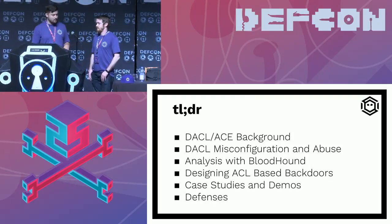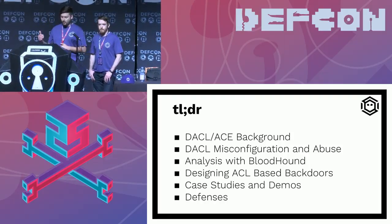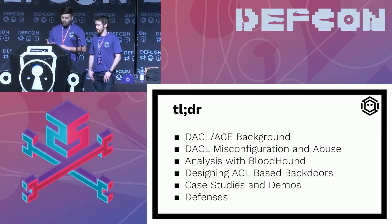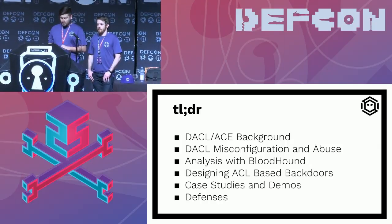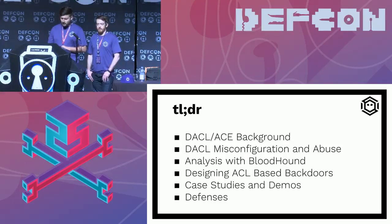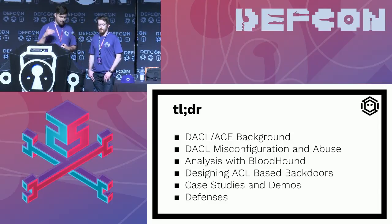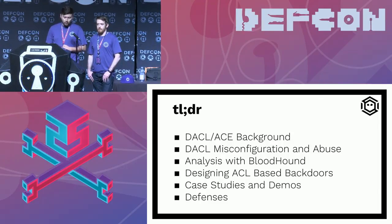I'll give you a quick TL;DR of where we are now, where we're going, and where we'll wind up. First we'll talk about DACLs and ACEs — what they are, how they work, why they matter. We'll look at typical misconfigurations and how to abuse them, then analyze this with BloodHound from offensive and defensive perspectives. We'll look at designing ACL-based backdoors, show demos and case studies, and finally talk about what defenders can actually do about all this.